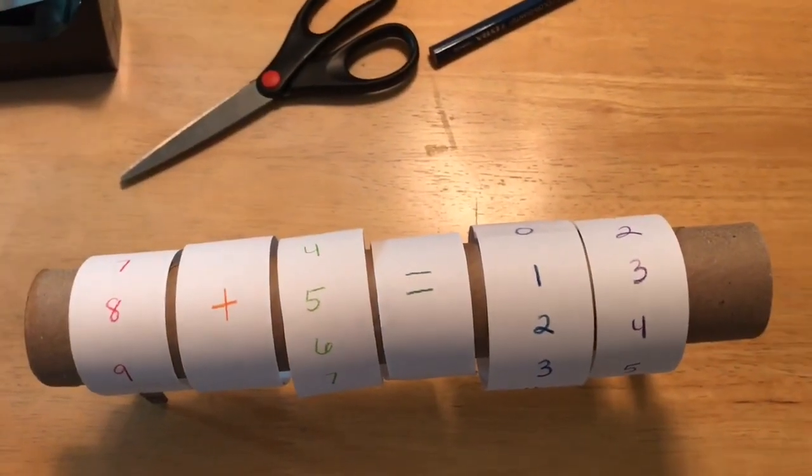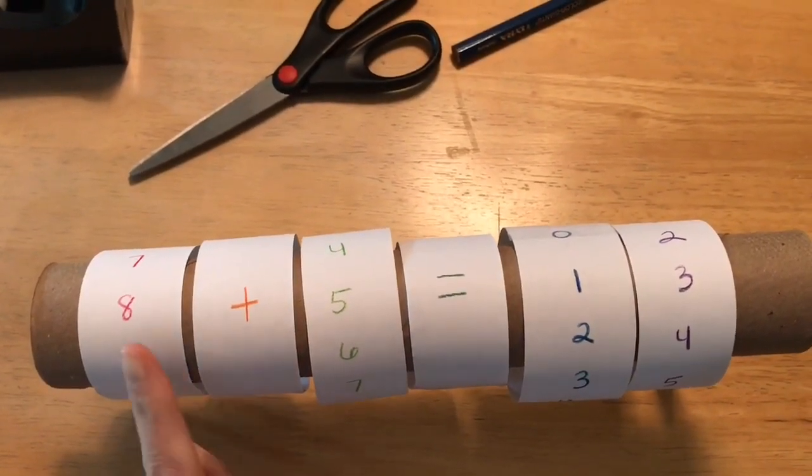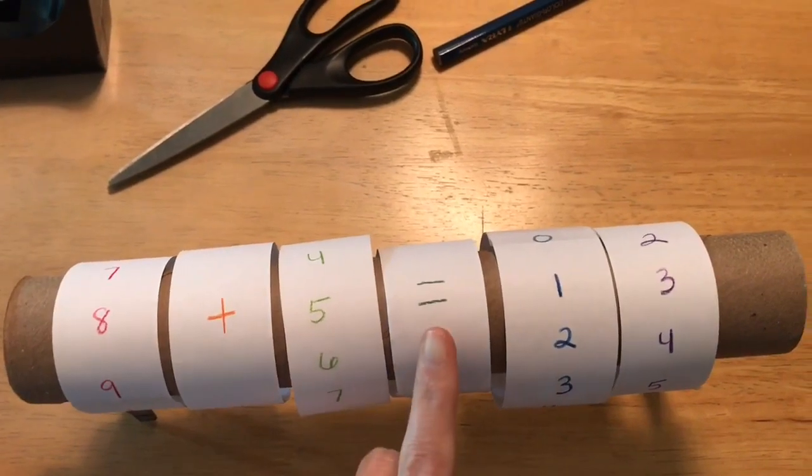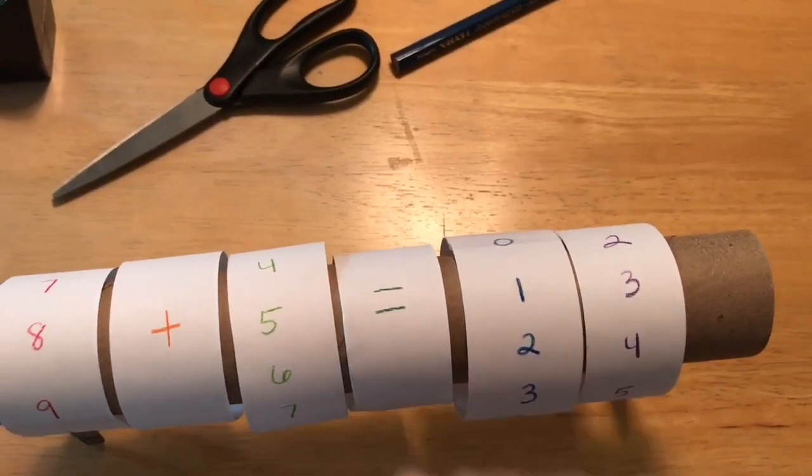So what I did was I changed the operation symbol from subtraction to addition, so now the problem reads eight plus five is equal to. And I needed a one and a three, so I just brought that purple ring back up to make the number thirteen.